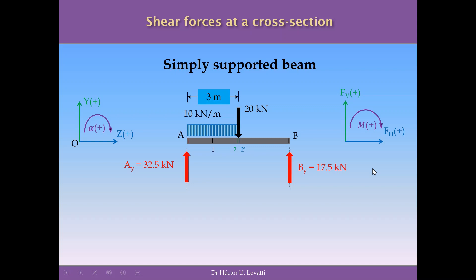In this exercise, we have a simple supported beam subjected to 10 kN per meter from 0 to 3 meters, and 20 kN applied punctually in the middle of the beam. The reactions are 32.5 kN and 17.5 kN. We need to first sketch reference lines — the reference line for the shear forces — which is usually called the neutral axis.